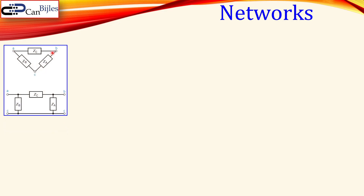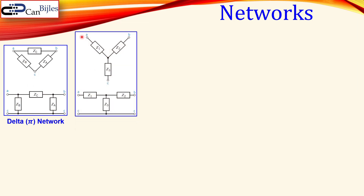Let's first discuss the networks. We have the delta network, which is also called the pi network, because if you redraw it and look at nodes A, B, and C, it looks like a pi. The other one is the Y network, which is also called a star, but it can also be drawn as a T network. So we have the delta and Y, or pi and T networks.